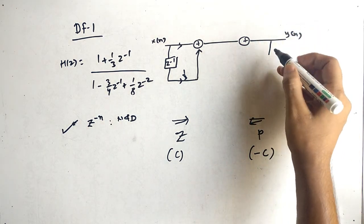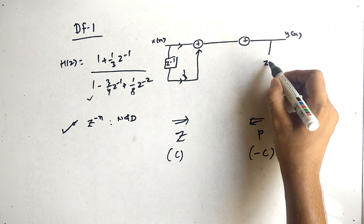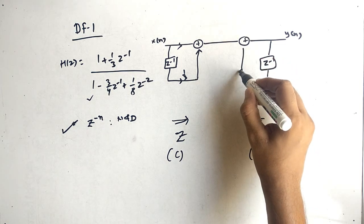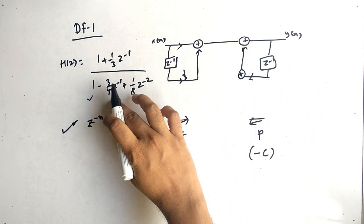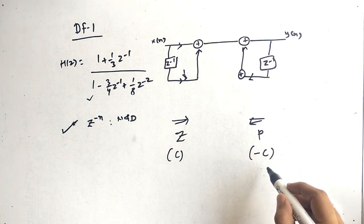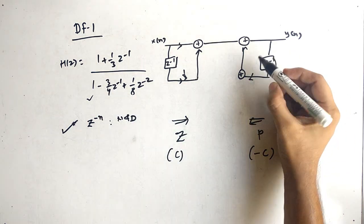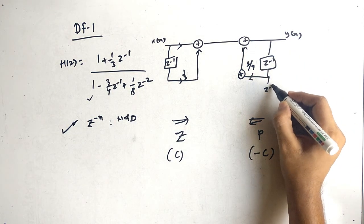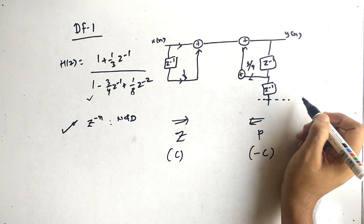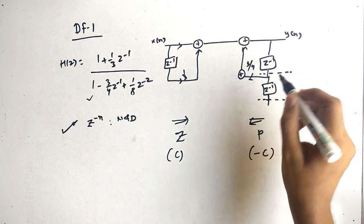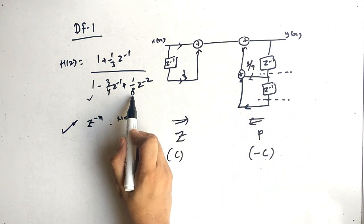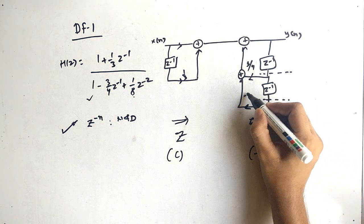For the poles, the 1 is going as it is. The first delay is z⁻¹, and the multiplier is minus 3/4. As mentioned, it should be the negative of the value, so here the original value is 3/4. Next, we get the z⁻² term. Here we have the z⁻² term and here the z⁻¹ term. The multiplier is 1/8, and we take the negative of that, so it is minus 1/8.